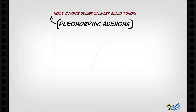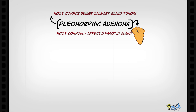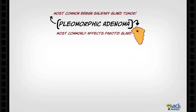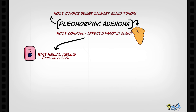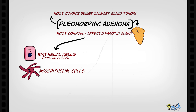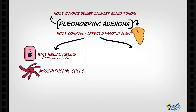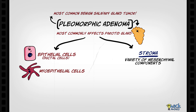Pleomorphic adenoma is the most common benign salivary gland tumor that most commonly affects the parotid glands. It is basically a tumor comprising of epithelial and myoepithelial cells in a stroma showing a variety of mesenchymal components.